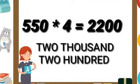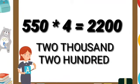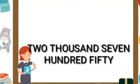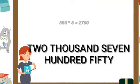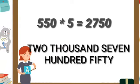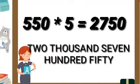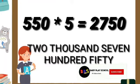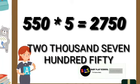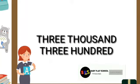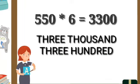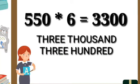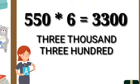550 fours are 2200. 550 fives are 2750. 550 sixes are 3300.